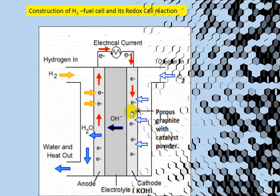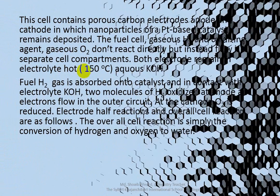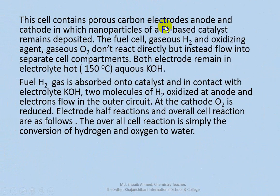This cell contains porous carbon electrodes — anode and cathode — in which nanoparticles of platinum-based catalyst remain deposited. The gaseous hydrogen fuel and oxidizing agent oxygen do not react directly; instead they flow into separate cell compartments. Both electrodes remain dipped in the electrolyte: hot aqueous potassium hydroxide (KOH).